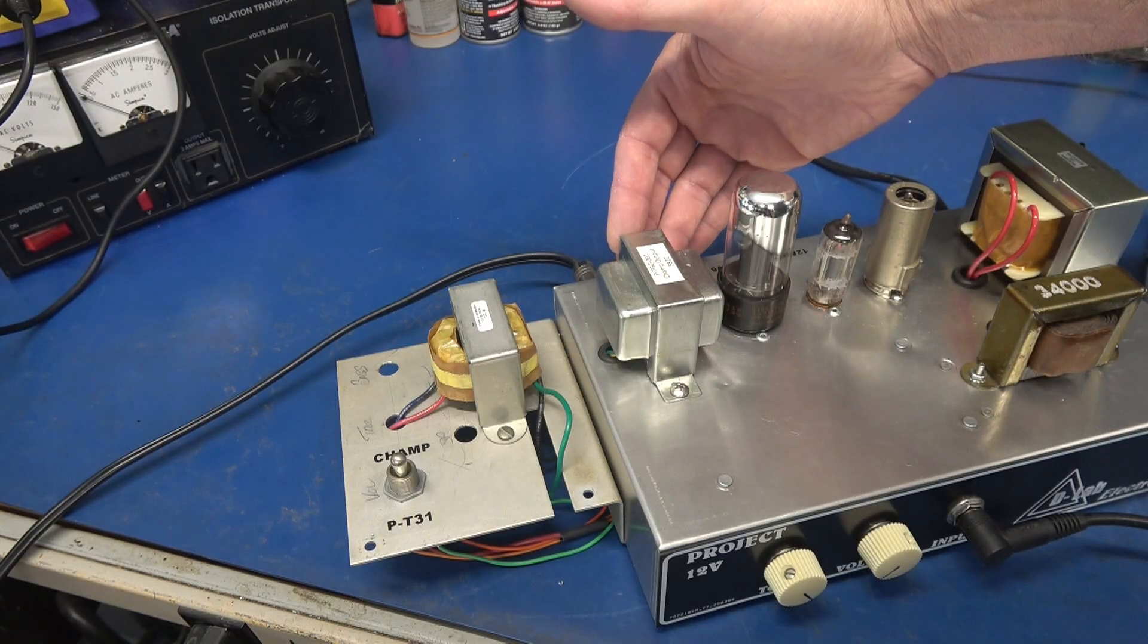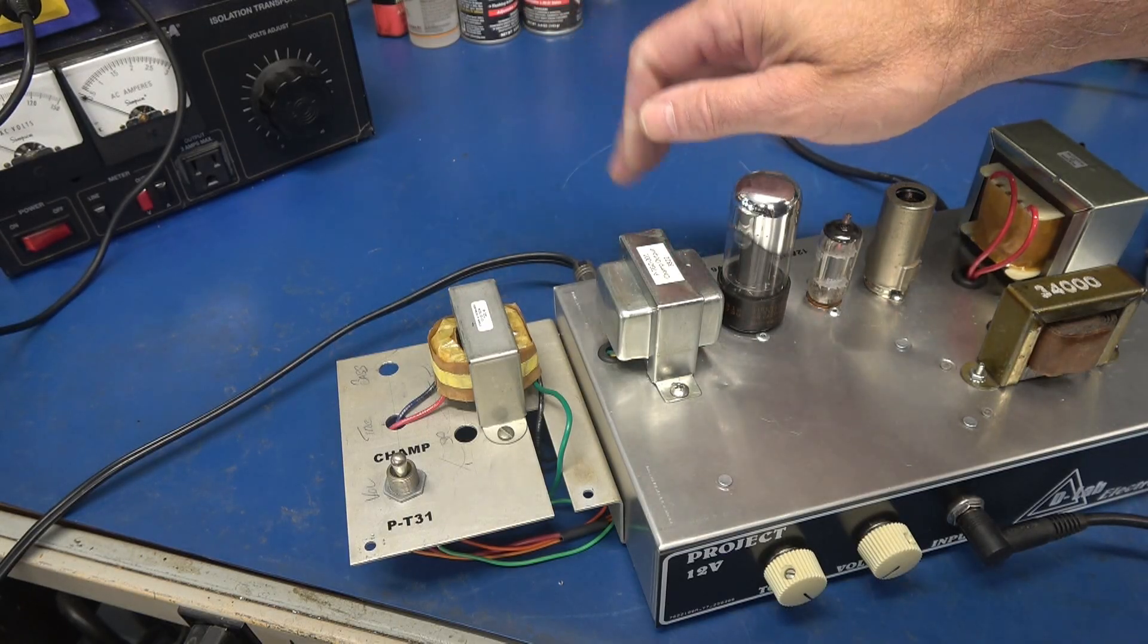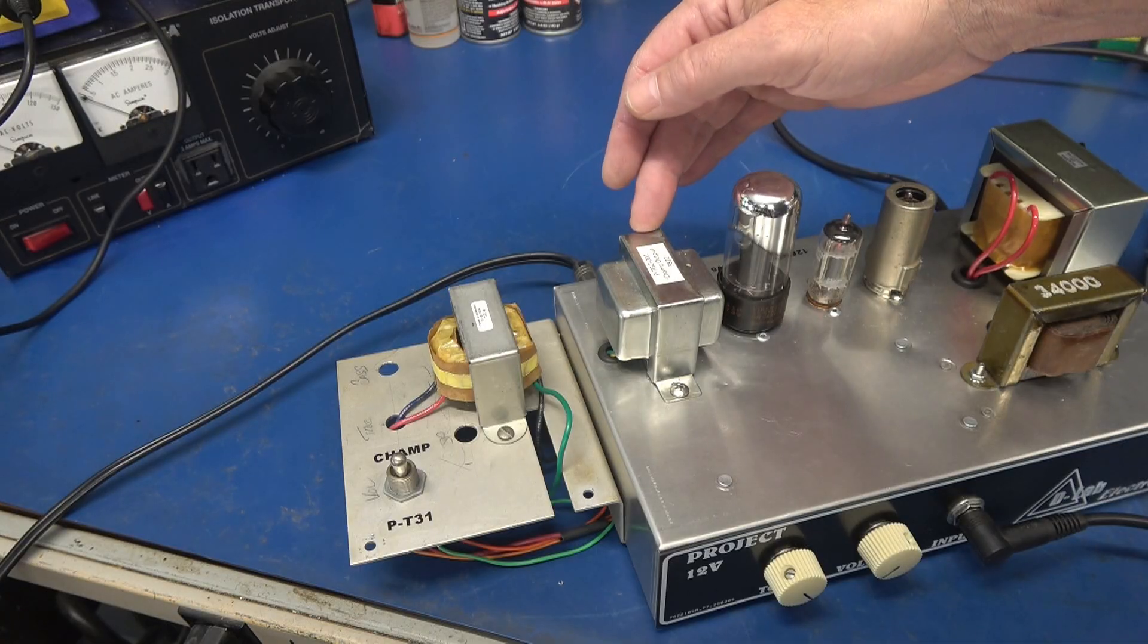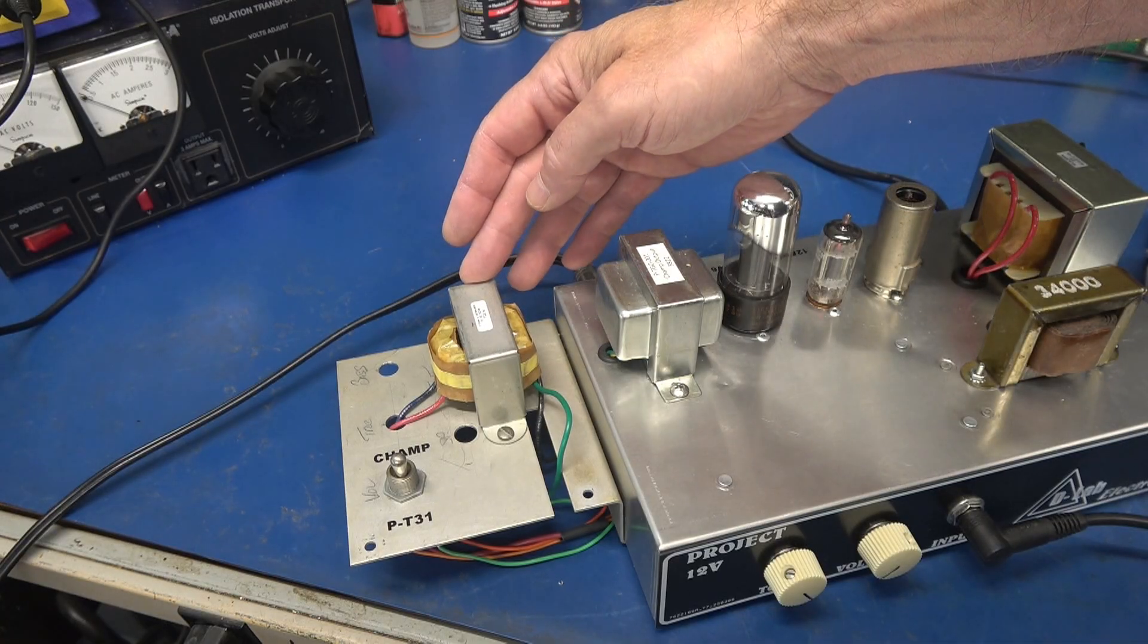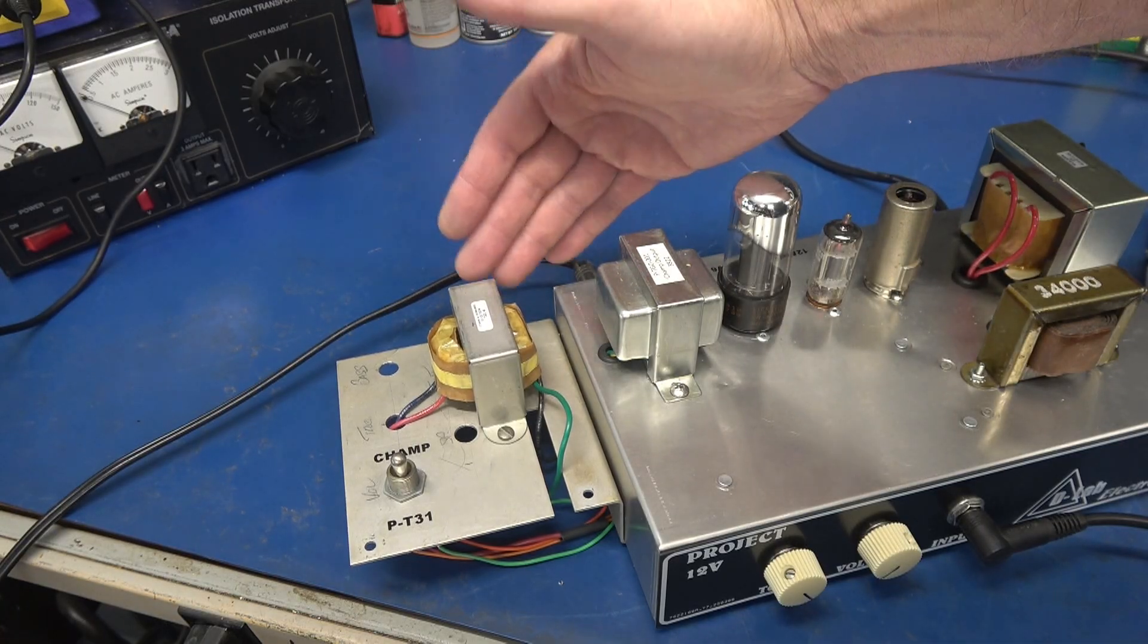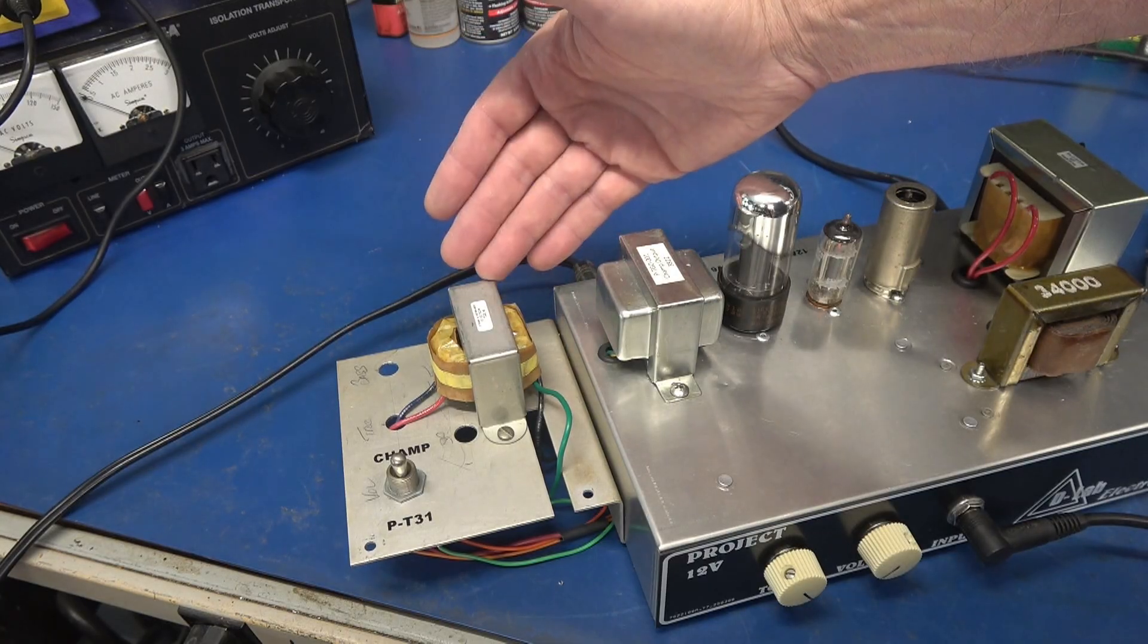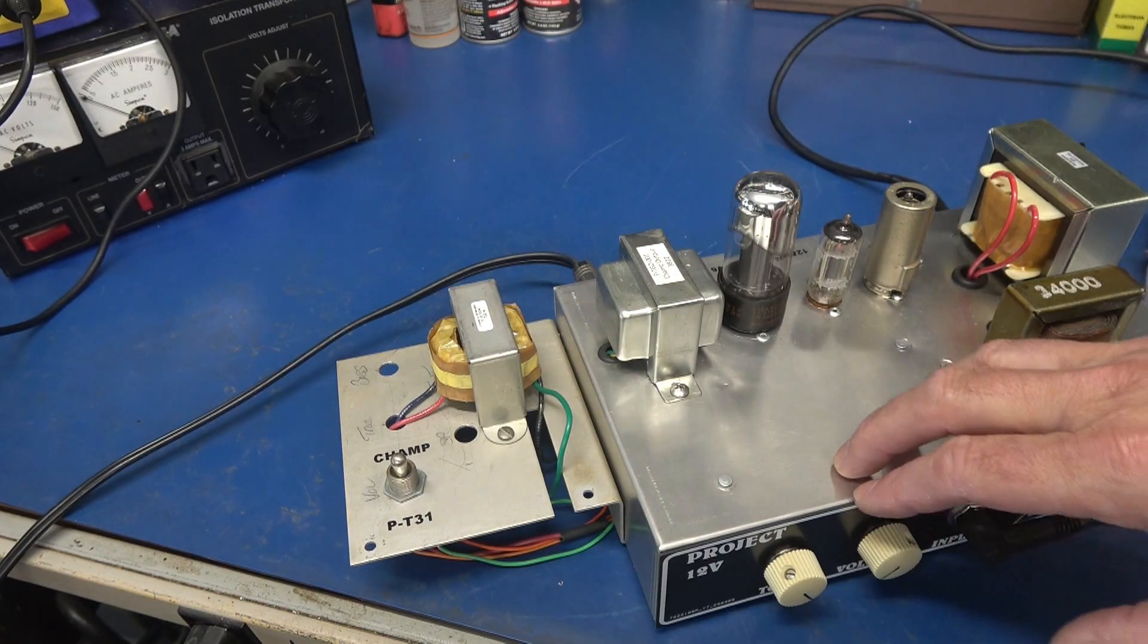Obviously, the CHAMP output transformer is dialed right in for a Fender CHAMP circuit. And it has taps for 8 and 4 ohms, whereas the P-T31 only has an 8 ohm output, which I primarily use for a Vox AC4 build.